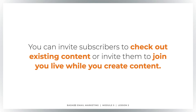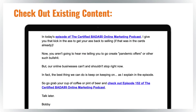Let me show you some examples and frameworks so you see what this looks like in real life. Here is an example of the call to action section for an email where I was inviting people to check out an existing podcast that had come out that day. I start with 'In today's episode of the Certified Badass Online Marketing Podcast' — with a link — and I give you that kick in the ass to get your ass back to selling if that was already in the cards. Before this, the story has already talked about people being afraid to sell during the pandemic and why that's a mistake. Then there are three short paragraphs, a sentence each, that dig into the topic and give subscribers a sense of what they'll be getting.